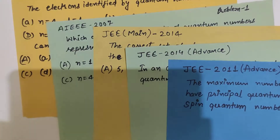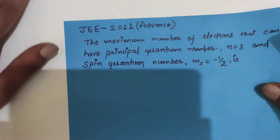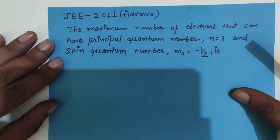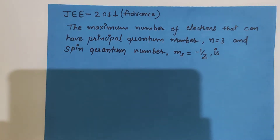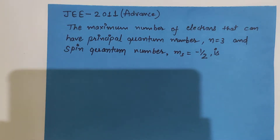We have a question from 2011. The question asks for the maximum number of electrons that can have principal quantum number n equals 3 and spin quantum number ms equals minus 1 by 2.